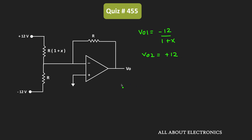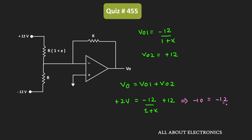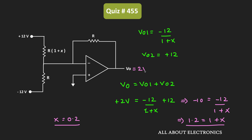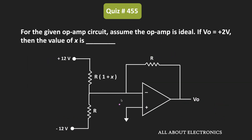The overall output voltage Vo equals Vo1 plus Vo2. Setting this equal to 2V: minus 12 divided by (1 plus X) plus 12 equals 2, which gives minus 12 divided by (1 plus X) equals minus 10, so 1 plus X equals 1.2, meaning X equals 0.2. Therefore, for the given circuit, when the output voltage Vo equals plus 2V, the value of X is equal to 0.2.